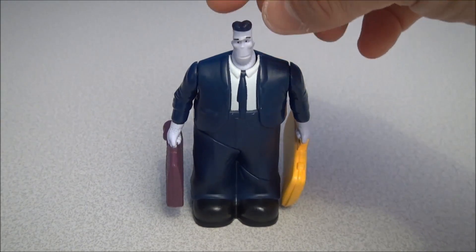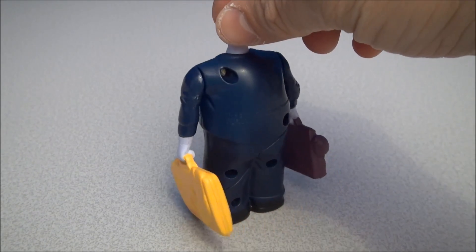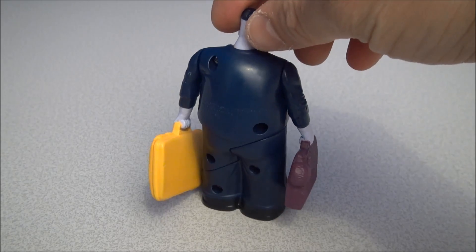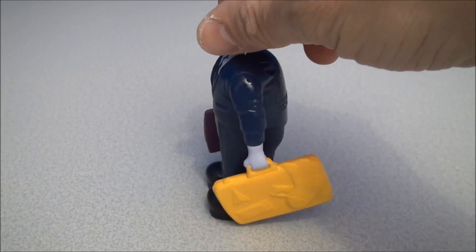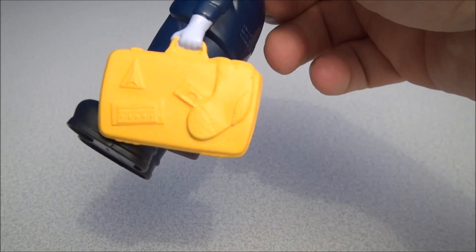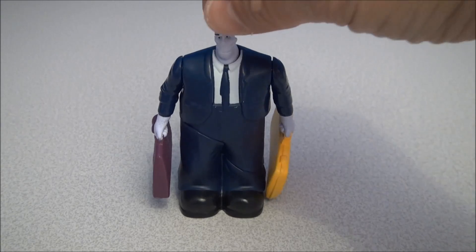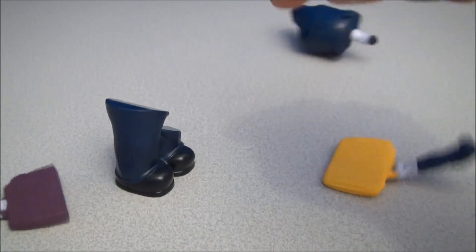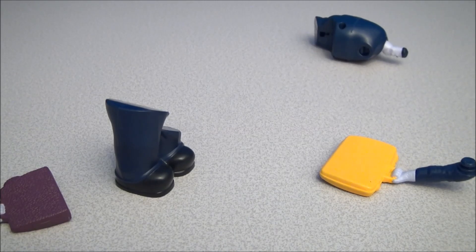Number two we have Fall Apart Frankie and these guys are actually kind of amusing. They're very fun to me. You can see this is a figure. He's got a couple of little briefcases here with socks and stuff coming out the side. What you do is you push down on his head and he falls to pieces.